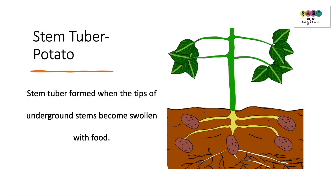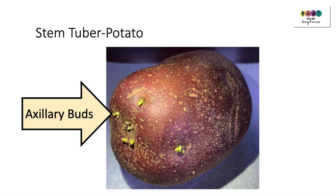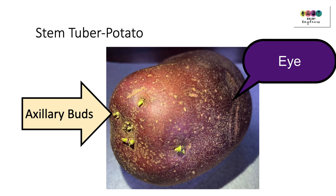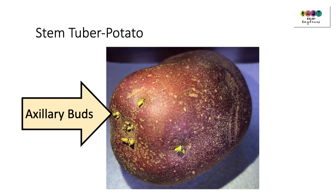One example of vegetative propagation using a stem is the formation of a stem tuber, and the potato is an example. A stem tuber is formed when the tips of underground stems become swollen with food, and these can give rise to new plants. When you examine the potato, you can see these eyes — they're actually the axillary buds, and it's these buds that can give rise to new shoots and form new potato plants.